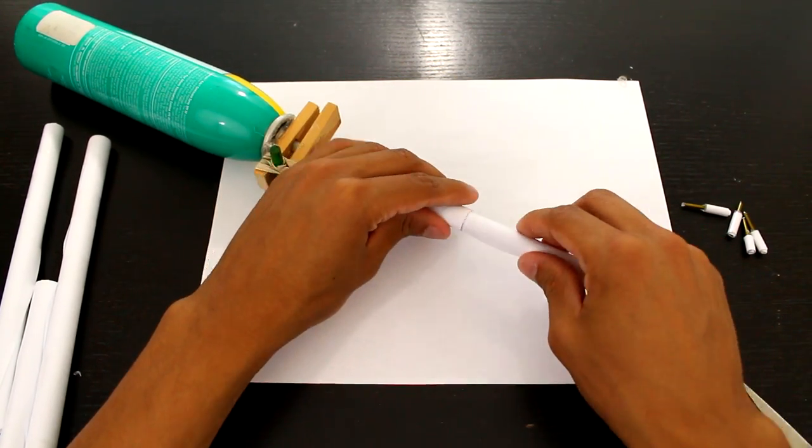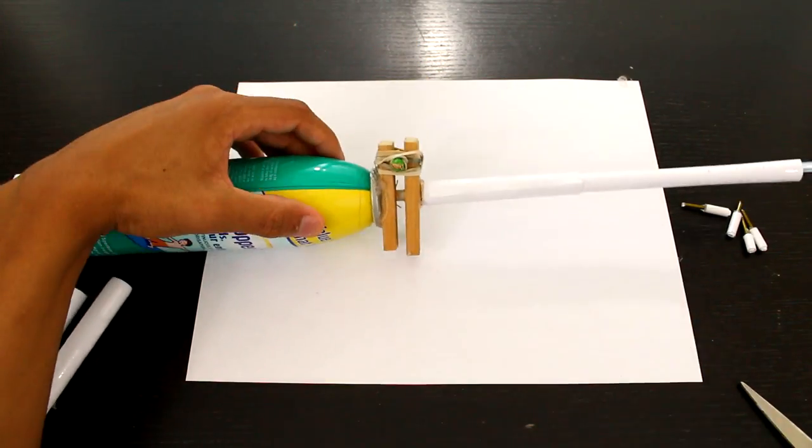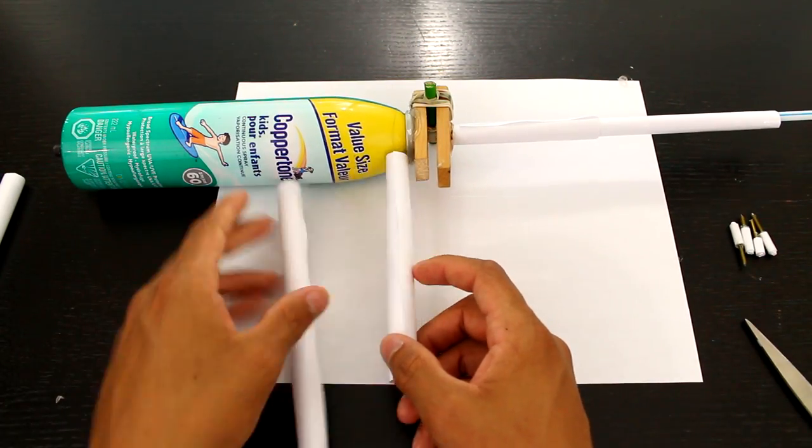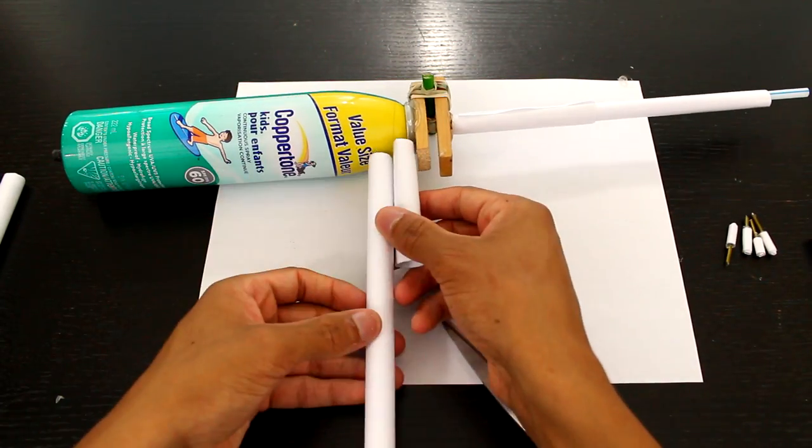Once I cut both to size and position them well I can then go ahead and glue them into place. After this we'll need a few more rolls of paper to make the handle.